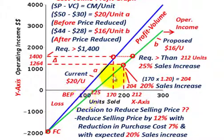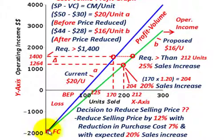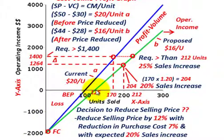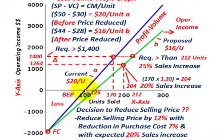Now let's look at our green line — that's the case for our proposal — where we calculated that contribution margin at $16 per unit. Again, we start at a fixed cost of negative $2,000 in operating income. Moving up to our break-even point, it would be 125 units. That's simply taking the $2,000 in fixed cost divided by $16 per unit contribution margin, giving us 125 units. So to break even under our proposal we have to sell 125 units, compared to only 100 units currently.